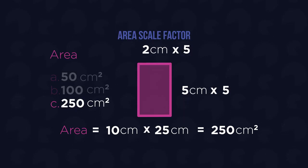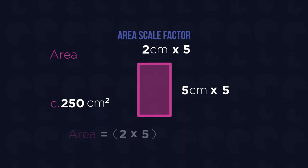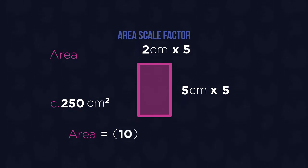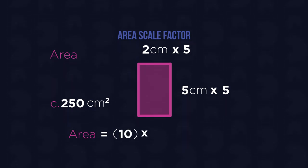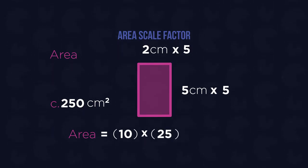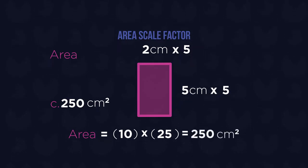The easier way to calculate this is to work out the area of the original rectangle — so 2 times 5, which equals 10 — and then multiply this by the square of the linear scale factor, so K squared equals 5 squared, which equals 25. You then multiply the two together to get 250cm squared.